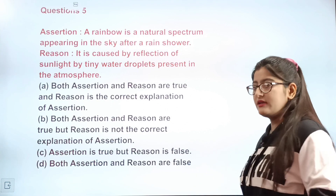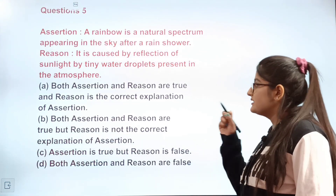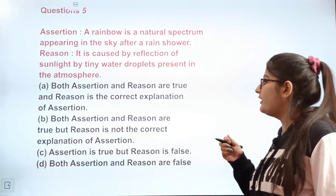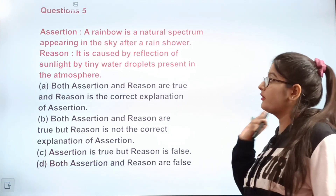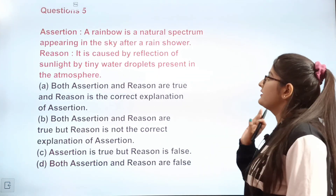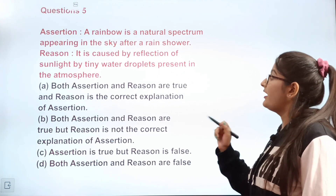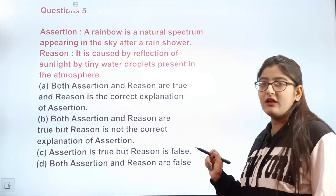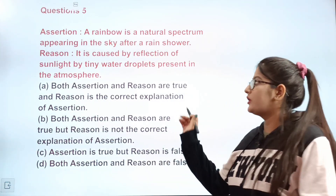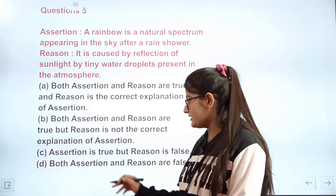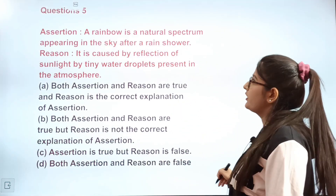The correct answer for Question 5 is C — the assertion is true (a rainbow is a natural spectrum appearing in the sky after a rain shower), but the reason is false. A rainbow is formed by refraction, not just reflection, so the reason given is incorrect.